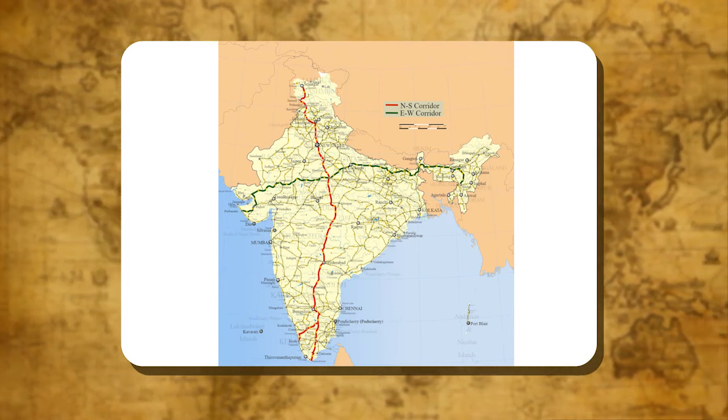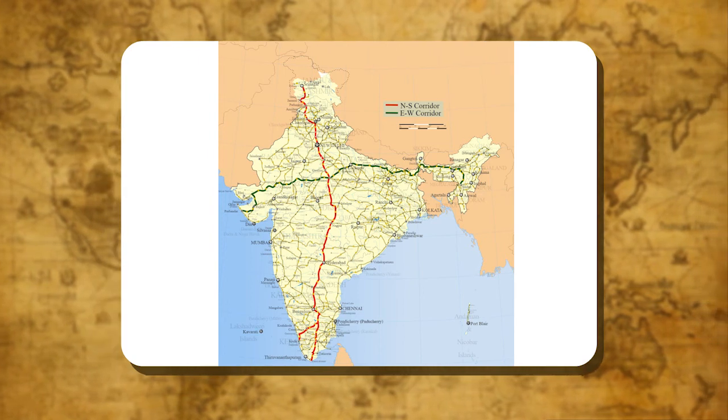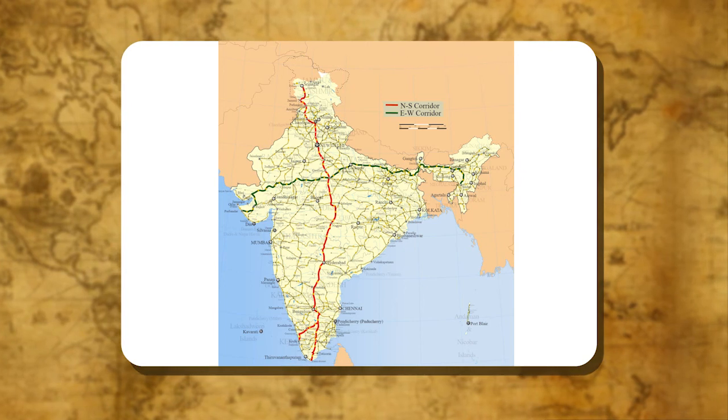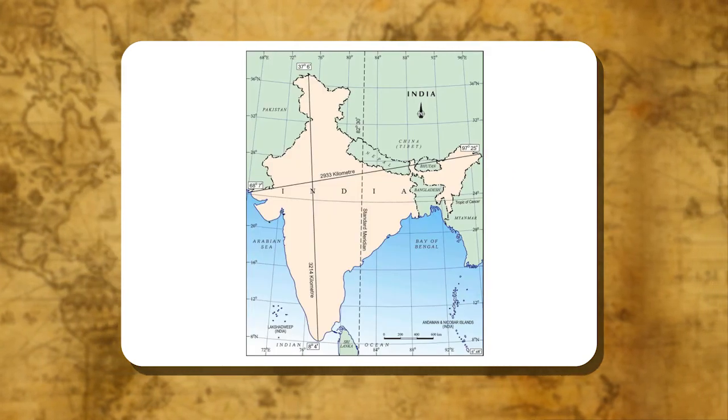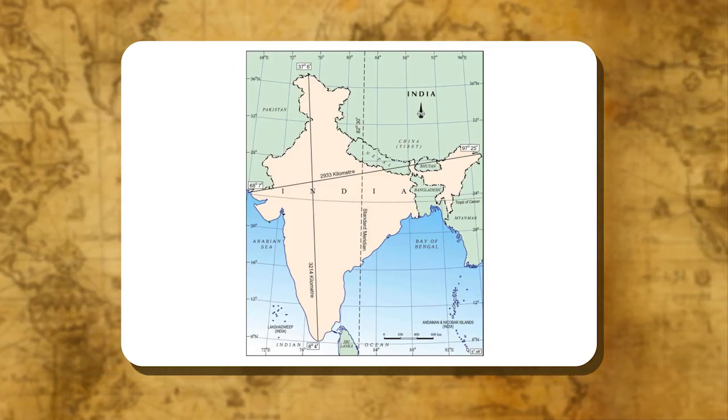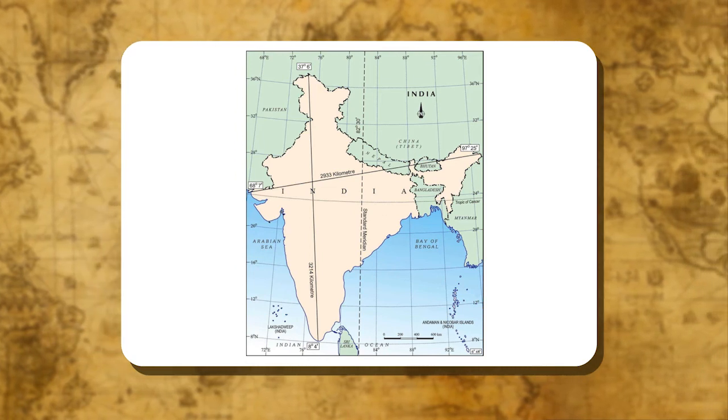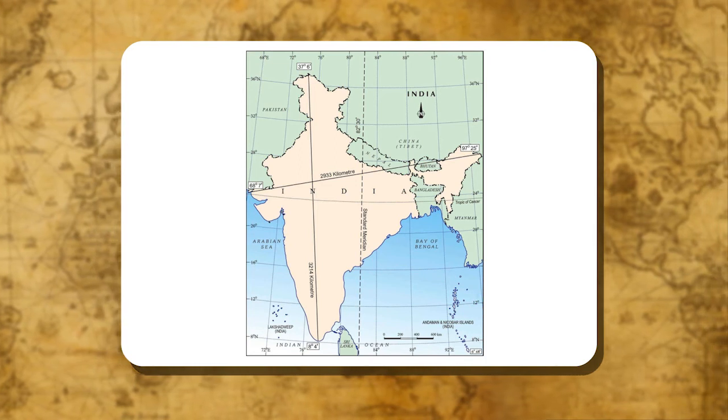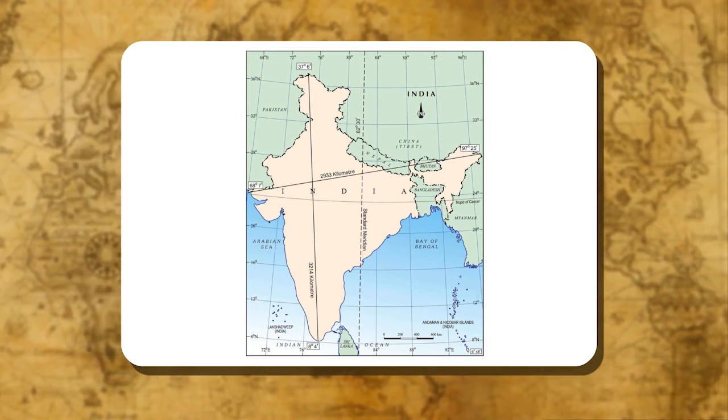In India, the longitude 82 degrees 30 minutes east is considered as the standard meridian. The local time at this meridian is taken as the standard time for the whole country, which is known as the Indian Standard Time (IST).